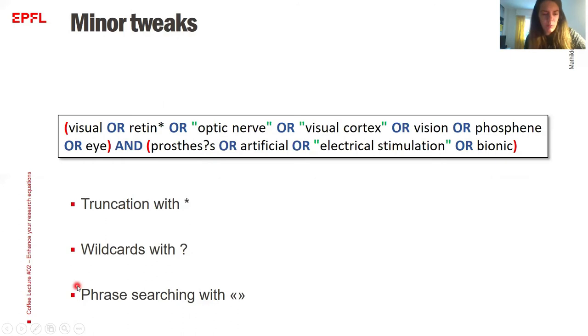It's useful also sometimes for words that have different spelling in American and British English. Another tip that you might be familiar with is the phrase searching, where you can use quotation marks to search for an expression in itself. So here I want visual cortex to be together. I don't want visual and letter cortex. I don't find it very interesting, but I want them to be grouped together. So this I can use and I can use the quotation mark for the system to look for this exactly.